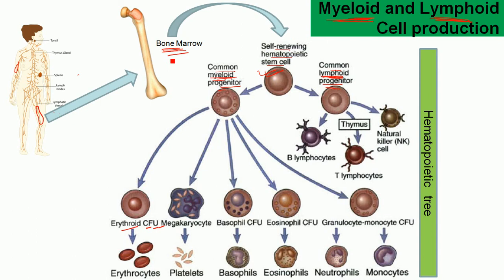They are produced in the bone marrow. Bone marrow is found inside the bones, especially on both sides of the big bones, which are located in the leg or in the hand.